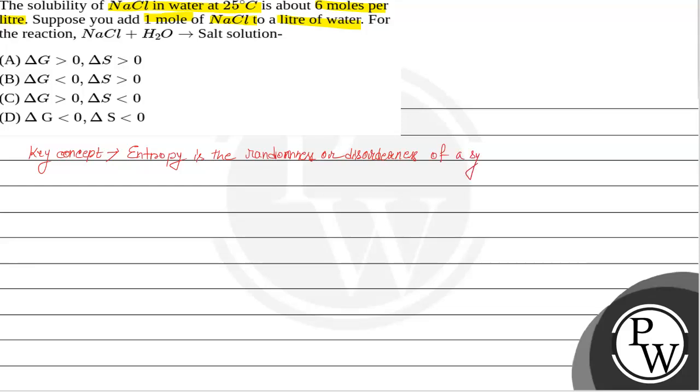See, if randomness or disorderness of entropy increases, the reaction will be spontaneous. That means if delta S is greater than 0 or positive, the reaction will be spontaneous.